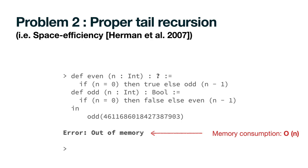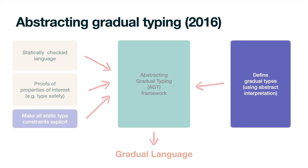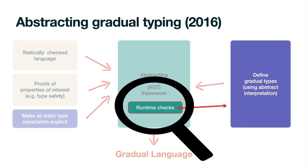This problem was originally identified by Herrmann et al. in other gradual languages. The AGT framework produces a gradual language that is only as good as our proposed design for gradual types, as it is this design that guides the introduction of runtime checks. The two problems mentioned did slip through the cracks, because the original design guidelines of the AGT framework are not restrictive enough to always avoid them.